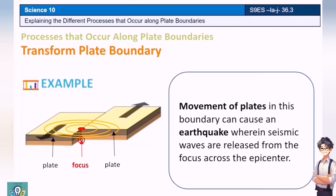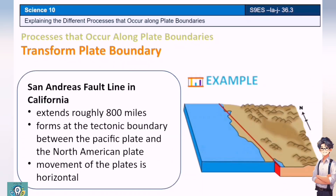Lastly, we have the Transform Plate boundary. Movement of plates in this boundary can cause earthquakes, wherein seismic waves are released from the focus across the epicenter. One example is the San Andreas Fault Line in California, which extends roughly 800 miles. It forms at the tectonic boundary between the Pacific Plate and the North American Plate. The movement of the plates is horizontal.